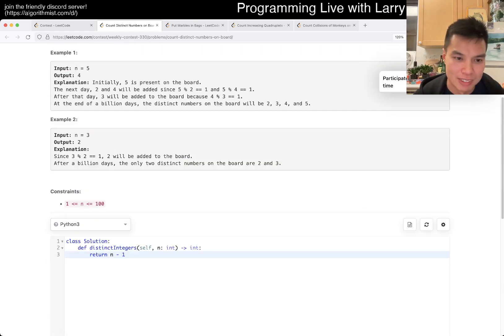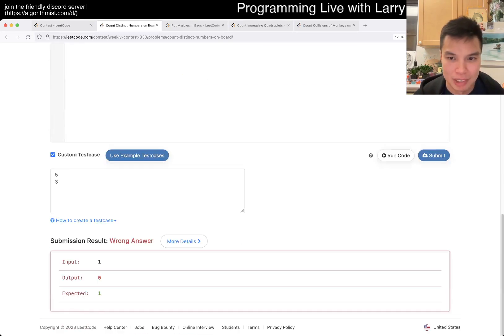Ah, except for 1. I knew that... If n is 1, then there's 1. Okay, fine.